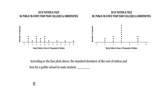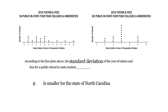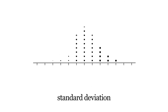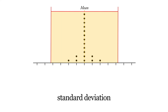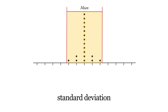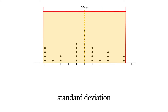The correct answer is: it's smaller for the state of North Carolina. We're not talking about the cost of tuition being smaller — we're talking about the standard deviation for the cost. The standard deviation describes how spread out the data is from the mean. If everything is tightly clustered together in one little area, then we have a smaller standard deviation.